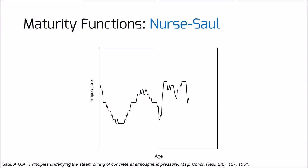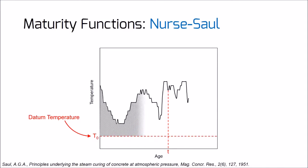For this purpose, the effect of time intervals with temperatures lower than the datum temperature are removed. The function simply gives the area between the datum temperature line and the temperature history. Saul presented the maturity rule as follows: concrete of the same mix at the same maturity has approximately the same strength, whatever combination of temperature and time goes to make up that maturity. It is worth mentioning that the Nurse-Saul equation is based on the assumption that the strength gain is a linear function of hydration temperature.